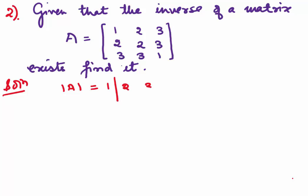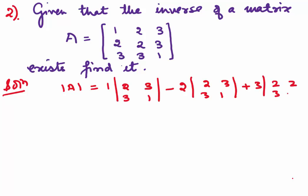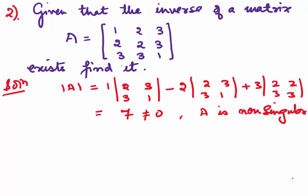For this 3×3 matrix, the determinant is computed by expanding along the first row. Opening it up, we get the value 7, which is not equal to 0, so our A is non-singular. They have given that the inverse exists, and we have also verified that.